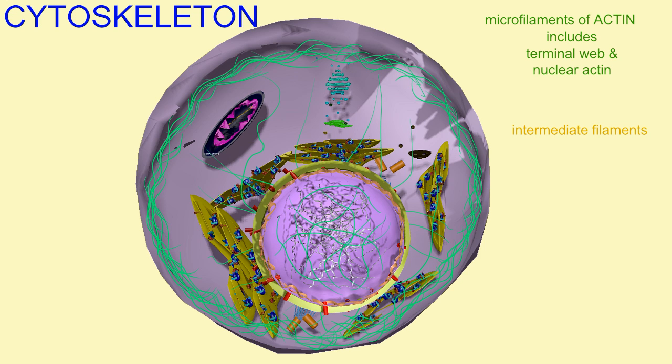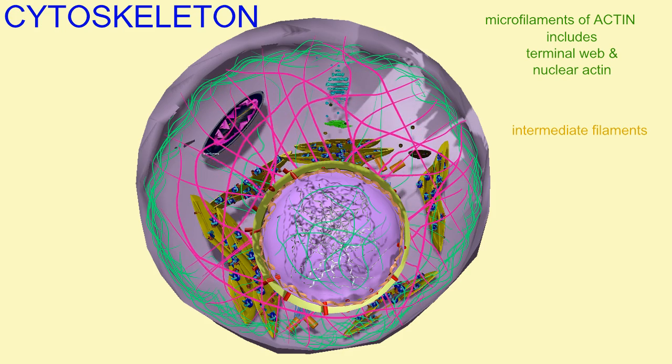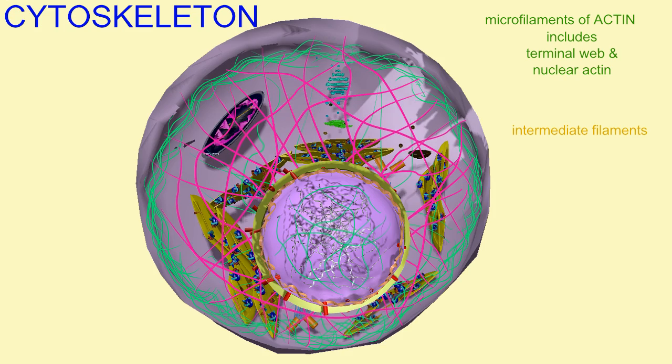The cytoskeleton can also include a number of intermediate filaments. These can attach to cell junctions, such as desmosomes,